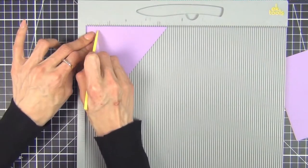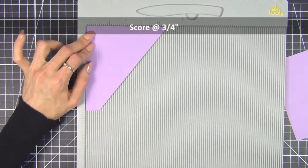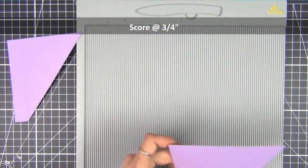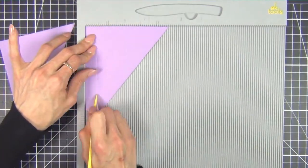After I erase my pencil marks, I grab my scoreboard and score at 3/4 of an inch in from the straight edge. And I do this for both sides.